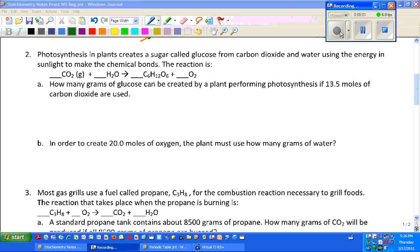Number two from the stoichiometry worksheet. We've got photosynthesis in plants creating a sugar from carbon dioxide and water and of course sunlight. We've got an equation but not a balanced equation.